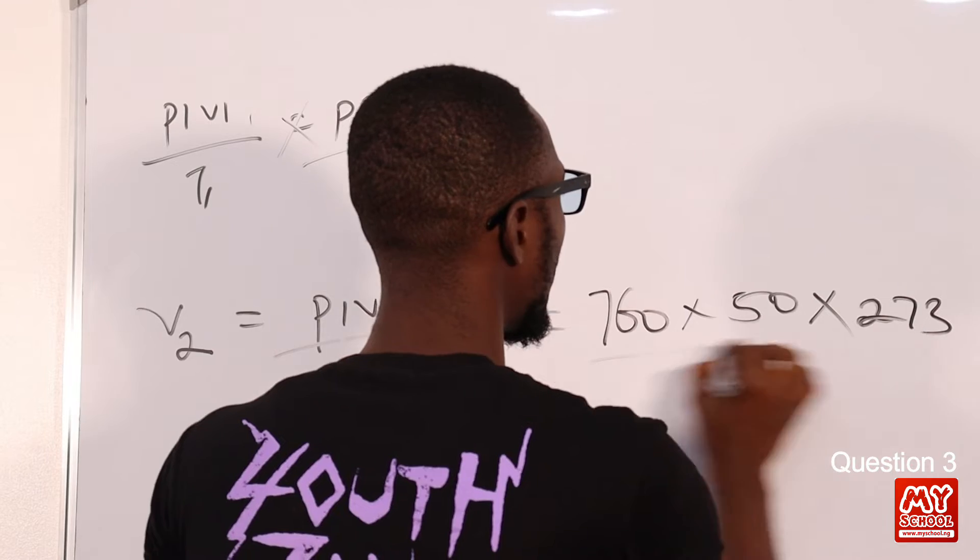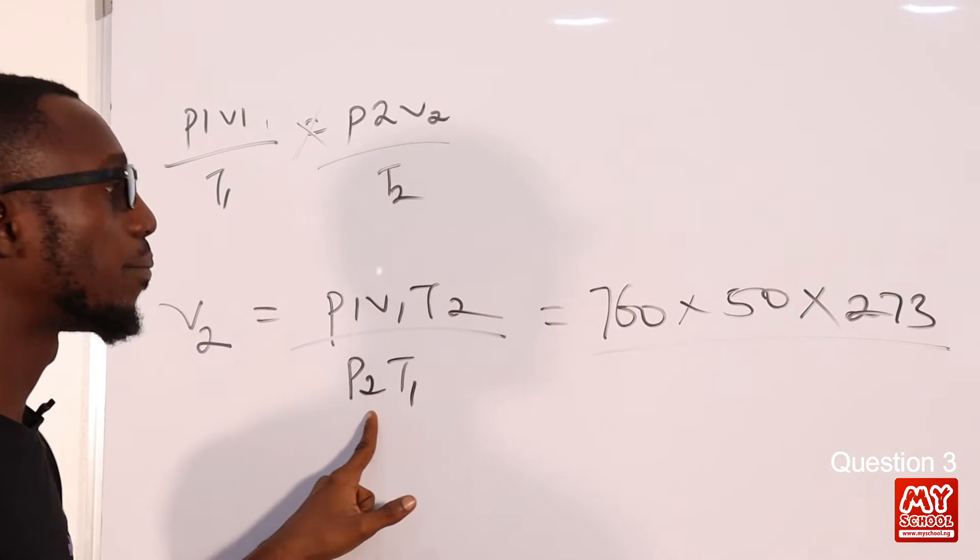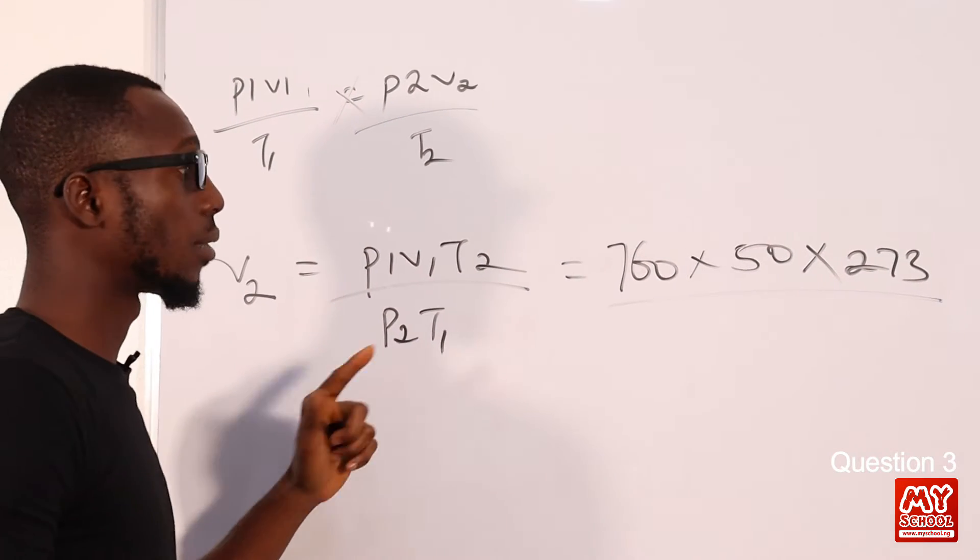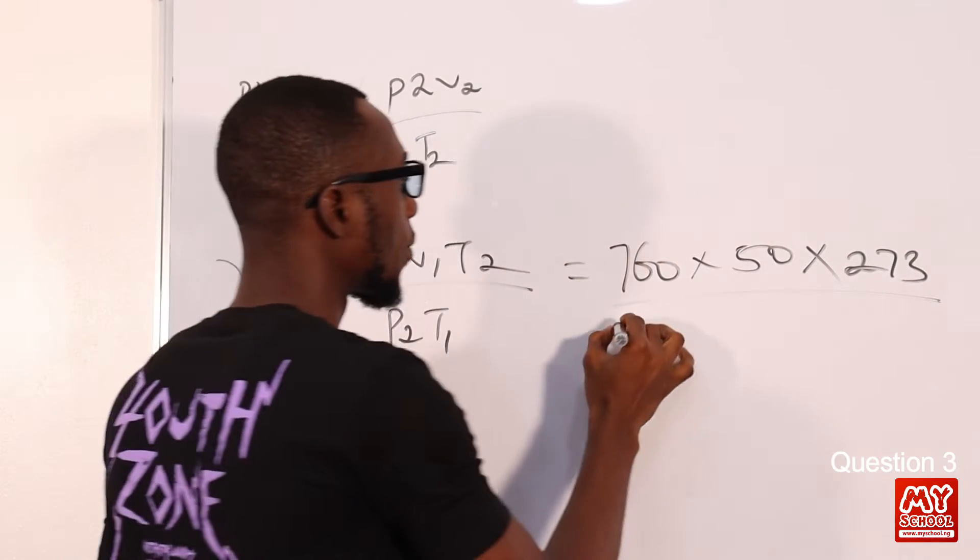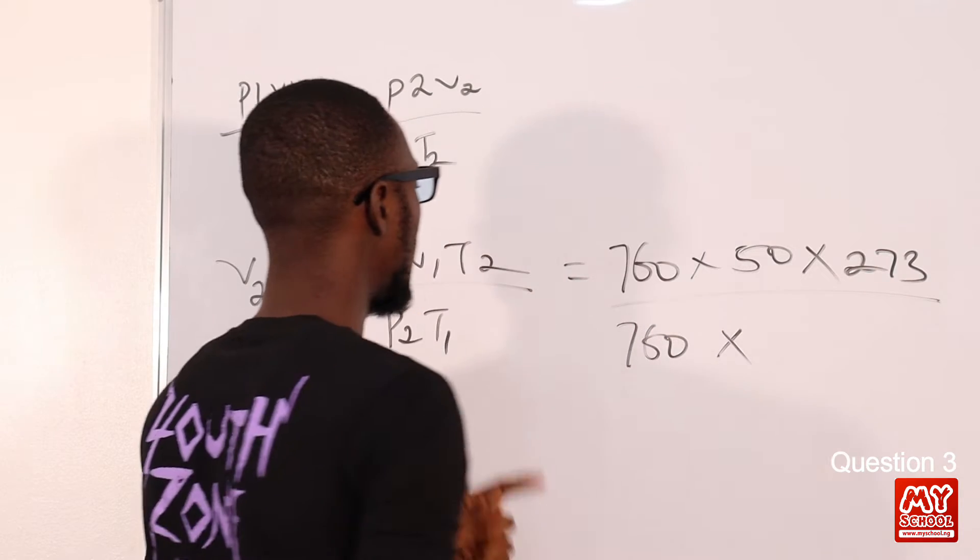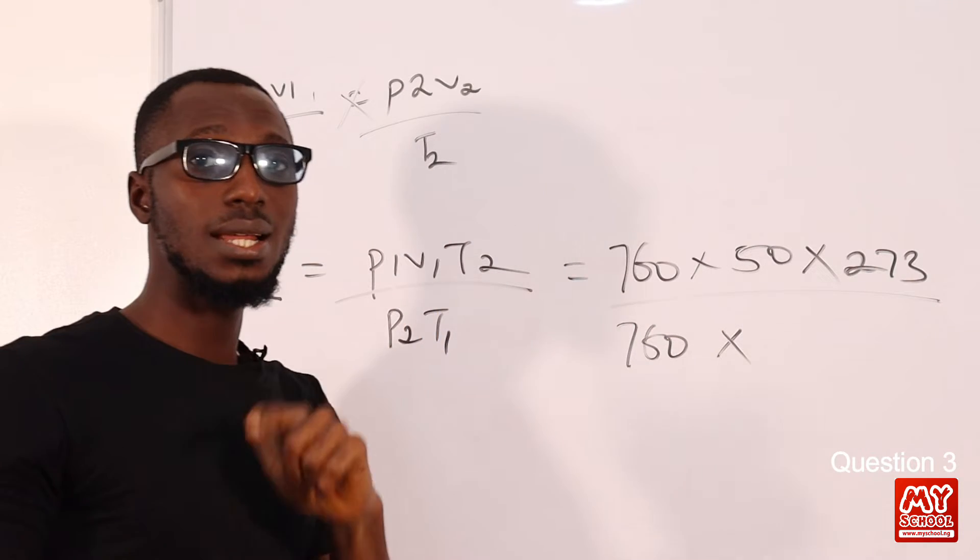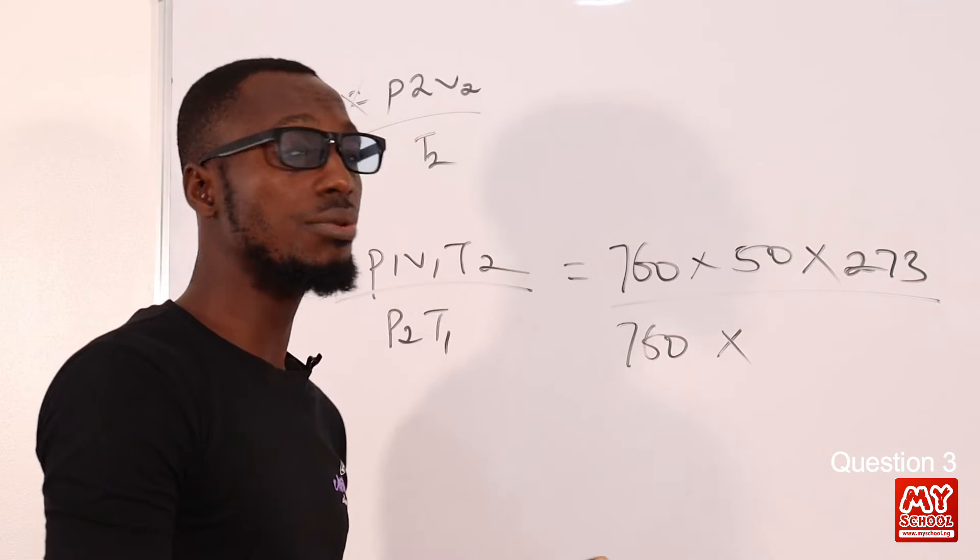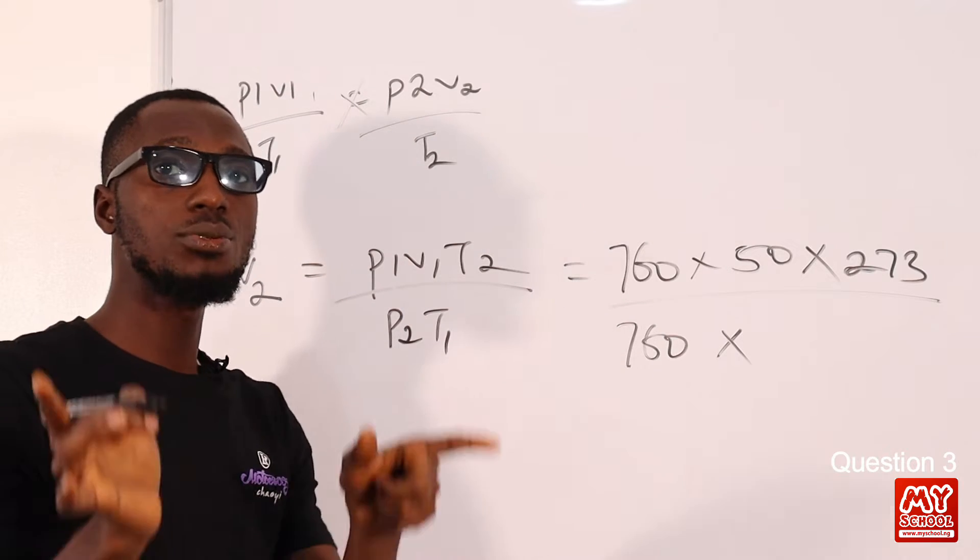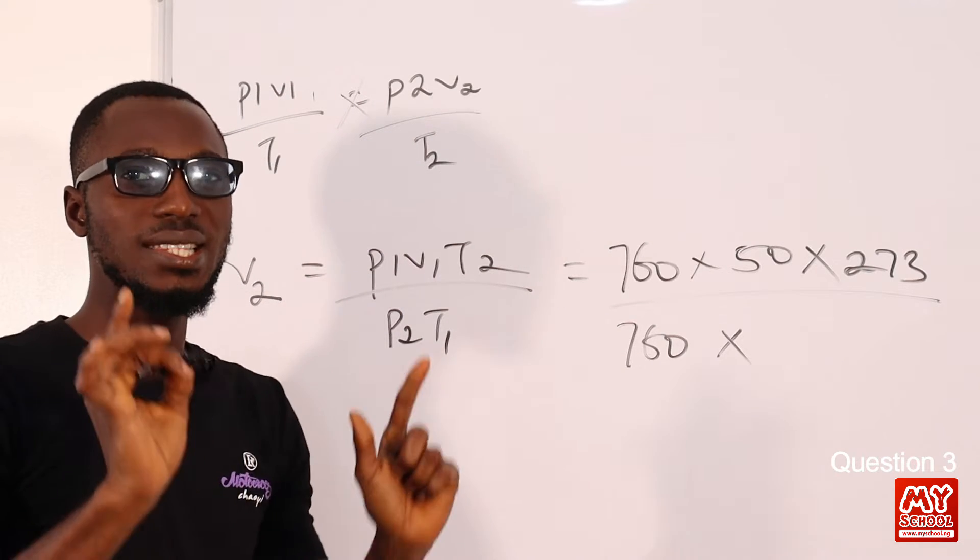We have T₂—at STP the volume of the gas makes 273 in Kelvin scale. Then we have P₂, which at STP is of course 760 as well.